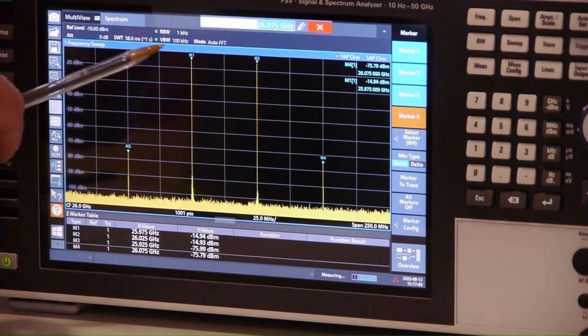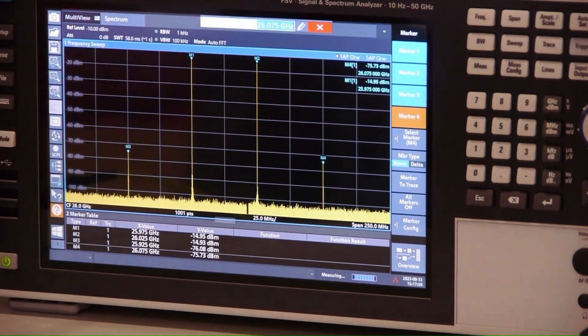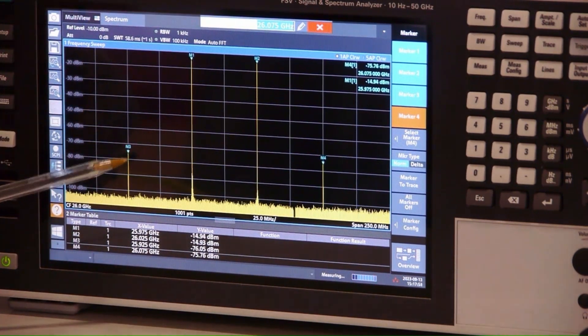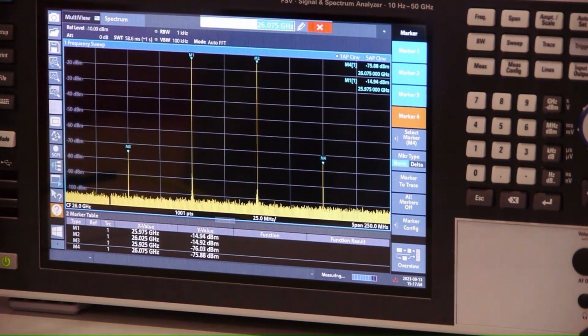The markers on the input test signals show an output of minus 15 dBm, whilst those on the distortion products are at minus 76 dBm, giving us an IMR, third order intermod ratio, of 61 dBs. With the distortion products so far below the test signals, we can be confident the amplifier is operating in its linear range.